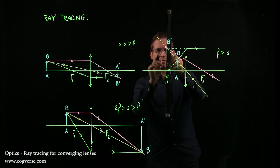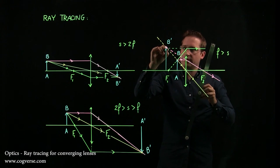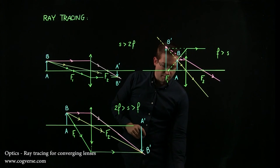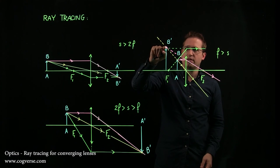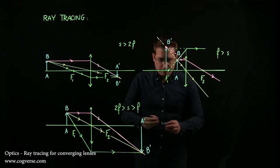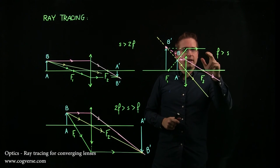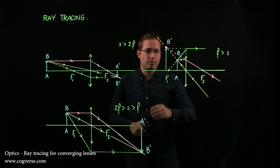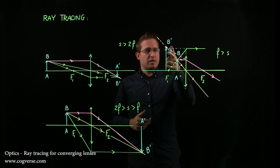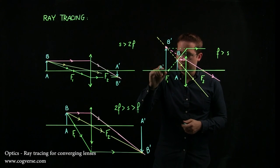And we can conclude that we get an image that is upright, enlarged, however virtual, because light doesn't actually go to this point here. It doesn't actually converge here. It appears to converge here. If my eye sees rays of light like this, it assumes that they all came from this point. And that means that this image is virtual. And this is point A'.